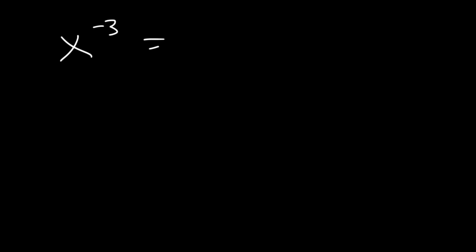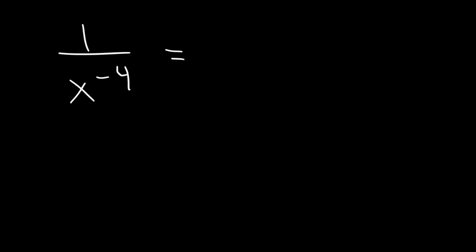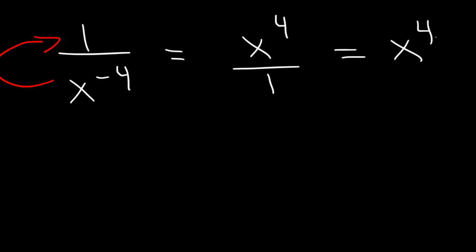What about x raised to the negative 3? If you have a negative exponent, all you do is take the variable and move it to the bottom. When you do that, the negative 3 becomes positive 3, so it's 1 over x cubed. Likewise, if you have 1 divided by x raised to the negative 4, you can move the x variable to the top and the exponent will change sign. So it's going to be x to the positive 4, or simply x raised to the 4th power.